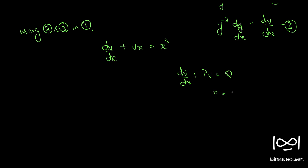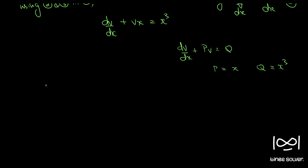Here p and q should be either constants or functions of x alone. Here p is x and q is x cube. So the integrating factor is given by e raised to integral p dx, which is e raised to integral x dx, giving us e raised to x square by 2 as the integrating factor.